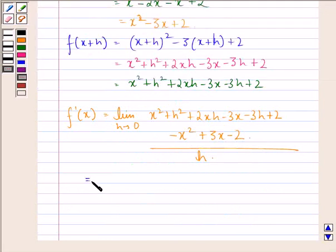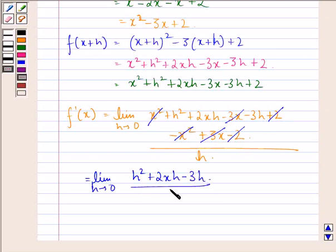This is equal to limit h approaching 0. Now, we see that +x² gets cancelled with -x², -3x gets cancelled with +3x, +2 gets cancelled with -2 and we have h² + 2xh - 3h divided by h.